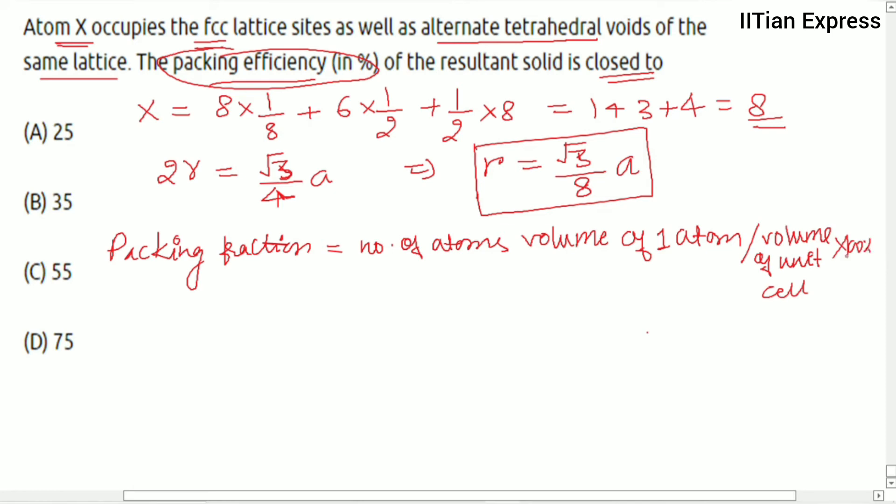This is number of atoms multiplied by volume of 1 atom divided by volume of unit cell multiplied by 100 percent. So further it's going to be like the number of atoms is 8 multiplied by 4/3 multiplied by 3.14.